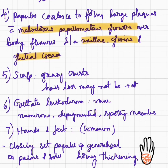Papules coalesce to form large plaques which are malodorous and appear as papillomatous growths over body flexures such as axillae, groins, and gluteal creases. The scalp is also involved in the form of greasy crust and hair loss may not be present. Guttate leukoderma, which is a rare variant, is characterized by the presence of numerous depigmented spotty macules.